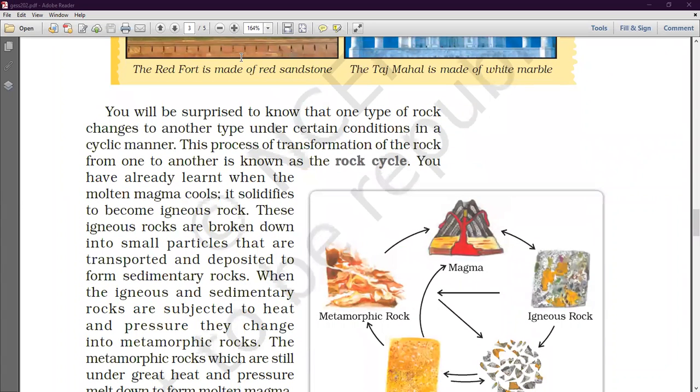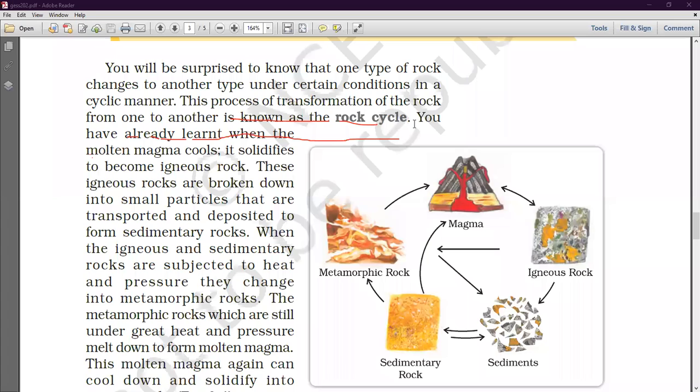So, you will be surprised to know that one type of rock changes to another type under certain conditions. We have studied this rock. The other rock is converted into the other rock. We have studied this. The igneous rock is what happens. What happens from your igneous rock? The igneous rock is molten magma. The picture is asked to me, what is the intrusive rock?